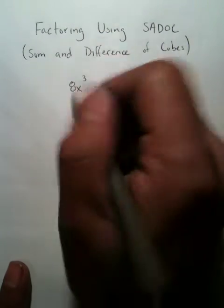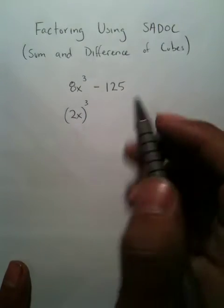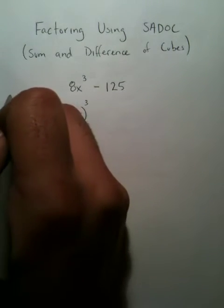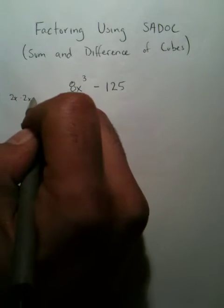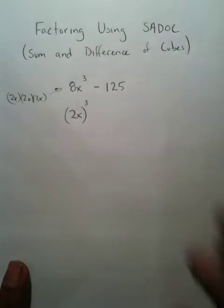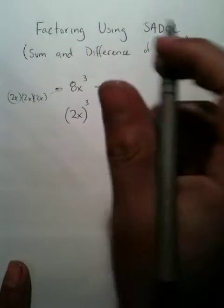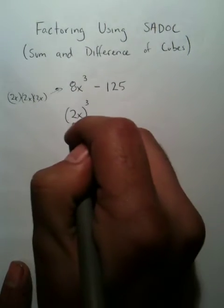8x to the third power is the same thing as 2x to the third power. The reason for that is because 2x times 2x times 2x is 8x to the third power. So make sure you put parentheses around this quantity because this is the important part.